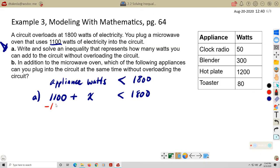I'm going to subtract 1,100 from both sides. And that's going to leave me X has to be less than 700 watts. Okay, so that actually satisfies the second part of A. Write and solve. So this is A, and this is also A. We wrote it, and we solved it.